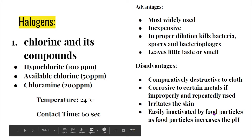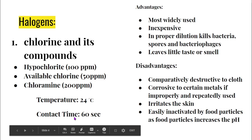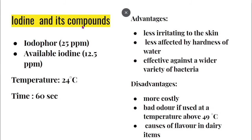Further disadvantages of chlorine compounds: they are corrosive to certain metals if improperly and repeatedly used, they irritate the skin, and are easily inactivated by food particles, as food particles increase the pH. When answering questions about halogens, you need to write about two sanitizers — chlorine and iodine. The next one to discuss is iodine and its compounds.